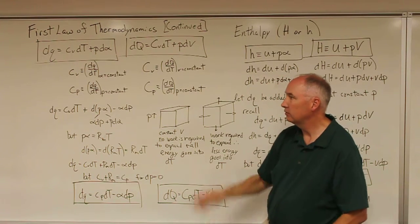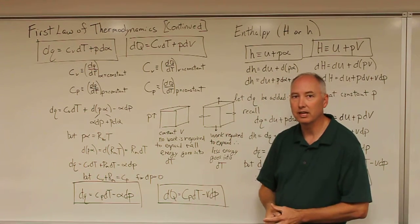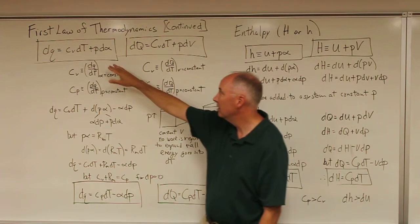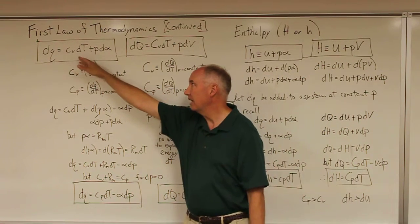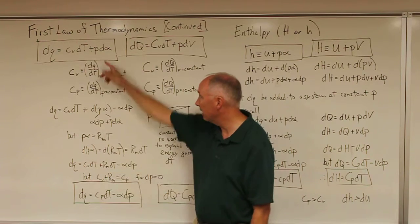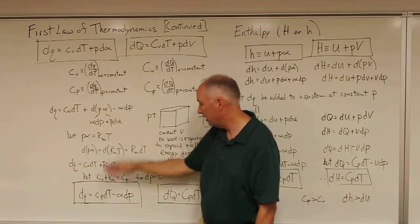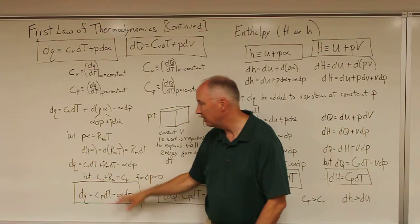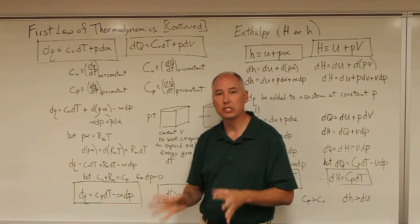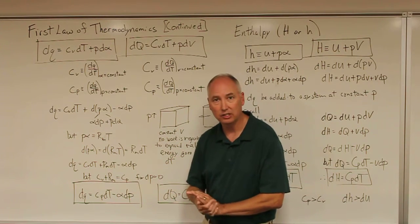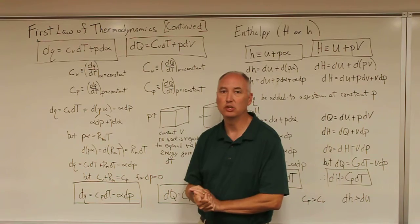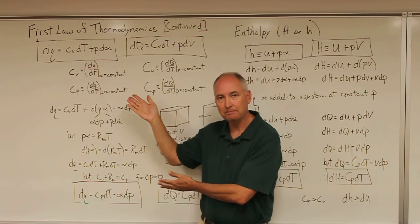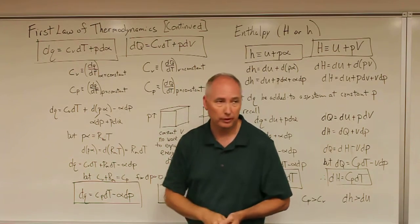We now have two forms of the first law of thermodynamics: one that has c_v dt and a change in volume, and one that has a change in pressure. These are useful depending upon the specifics of the calculation you're being asked to do — you can decide which equation is most useful for the problem at hand.